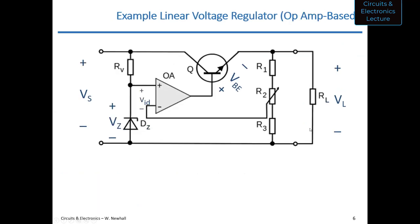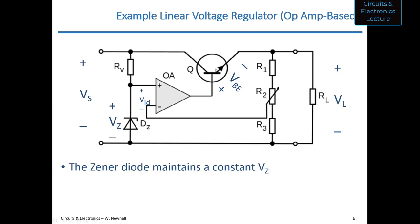We can take this one step further and look at a linear voltage regulator that's op-amp based, which is closer to how they're actually implemented in integrated circuits. Here, a biased zener diode provides a constant reference voltage Vz, and an op amp is connected to the base of a transistor — the transistor being the current-regulating device, the valve controlling current to the load. If the load voltage tries to fall, more current is supplied; if it tries to increase, less is supplied. That's what this feedback loop does — the op amp output feeds back to the inverting input.